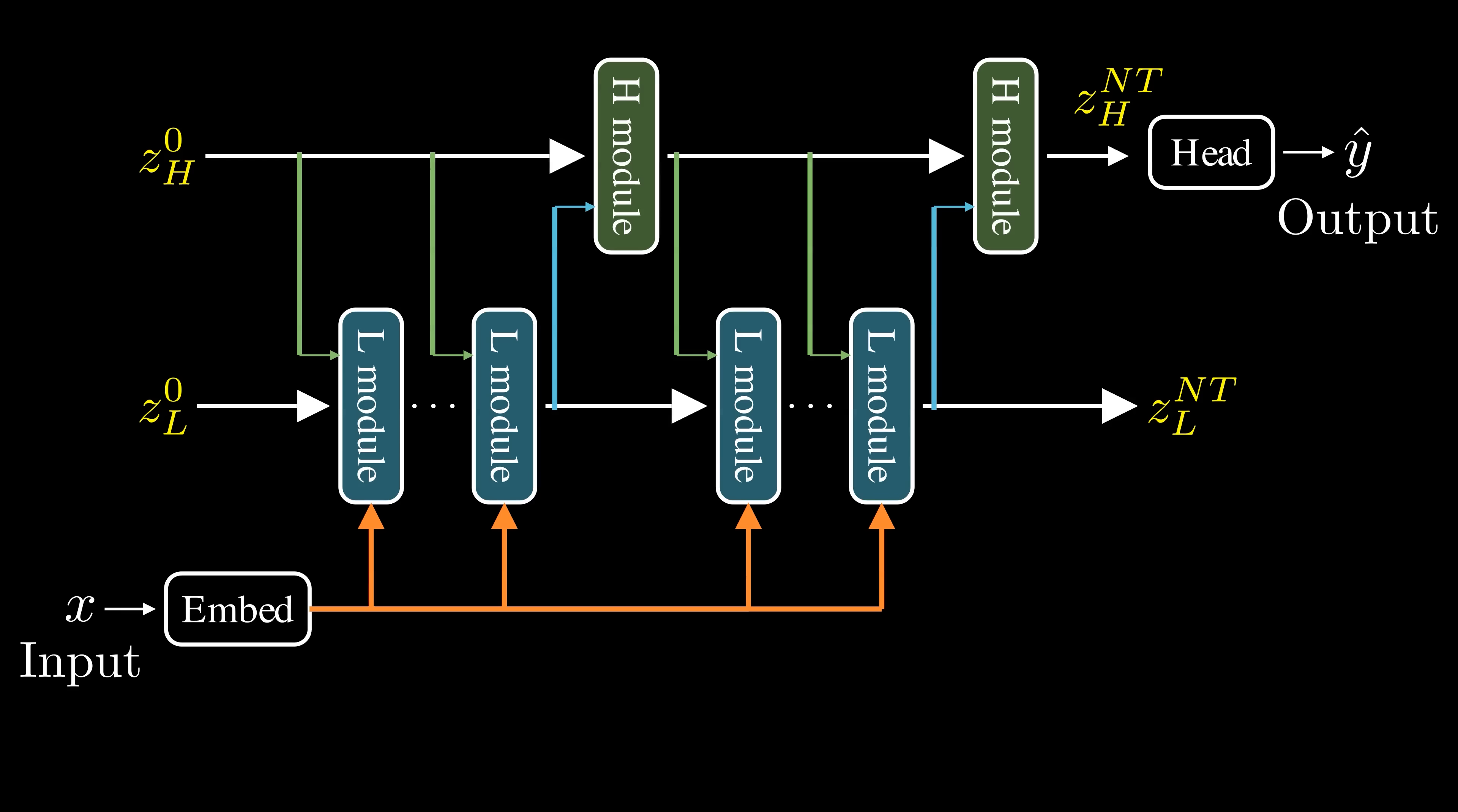The H module captures information over longer time horizons to build abstract representations, while the lower modules handle immediate, detailed computations.